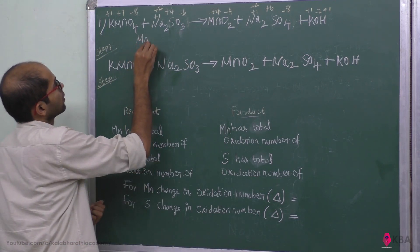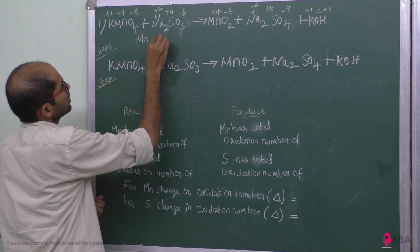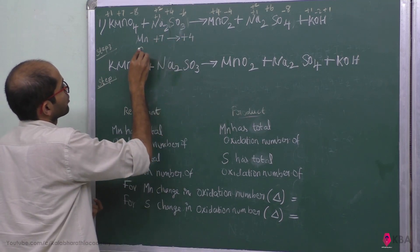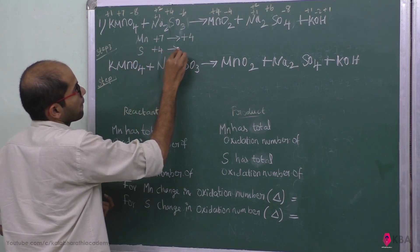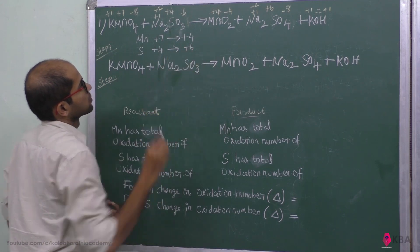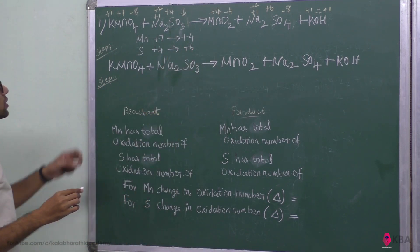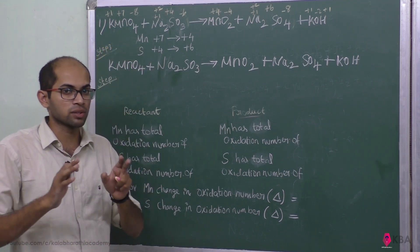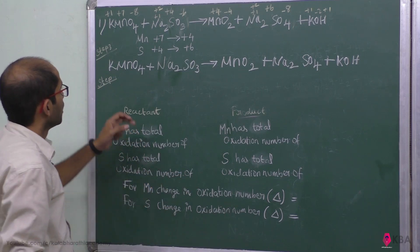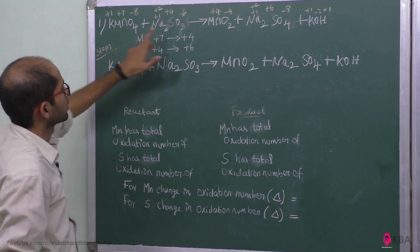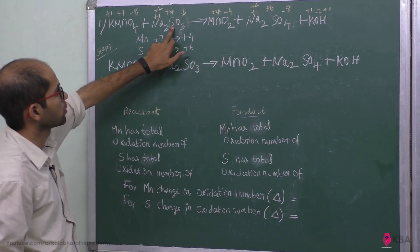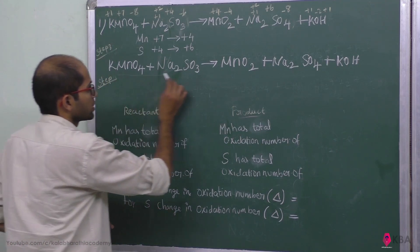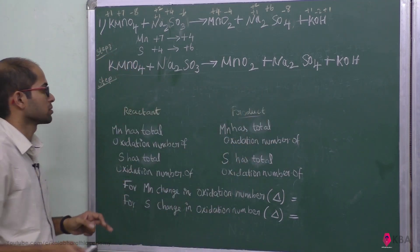Manganese changes from plus 7 to plus 4, and sulfur changes from plus 4 to plus 6 — so we calculate the change in single atoms. In the next step, for any atom whose oxidation number changes, we balance the atoms on reactant side and product side. Manganese is balanced on the same side, and sulfur is balanced on the same side, so they are automatically balanced.